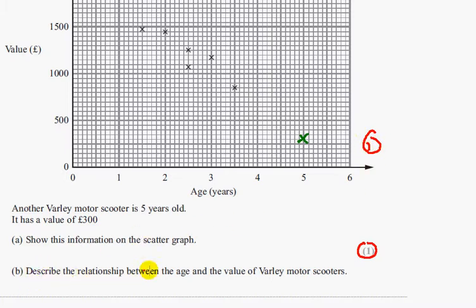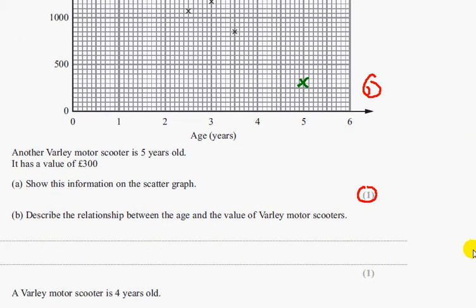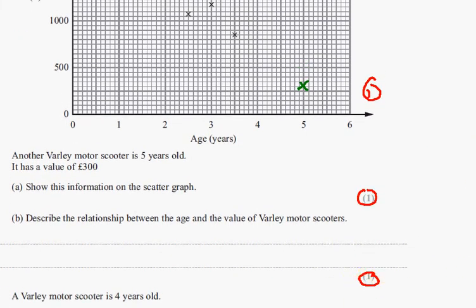Part B says describe the relationship between the age and the value of the motor scooter. And that's also worth 1 mark. So let's have a look.